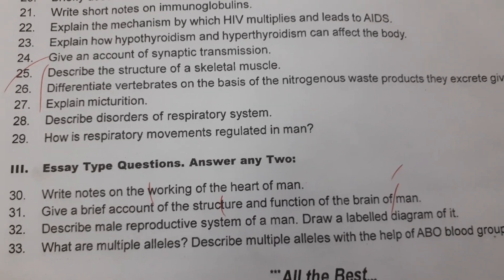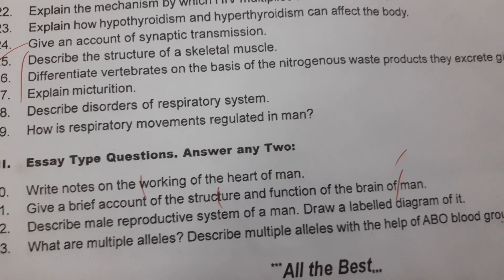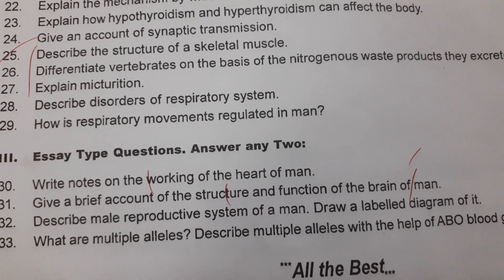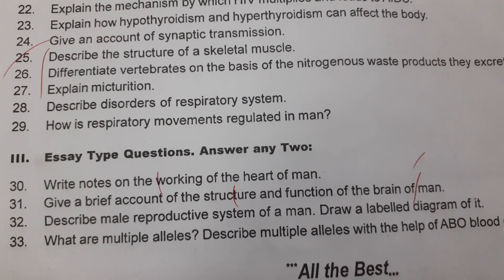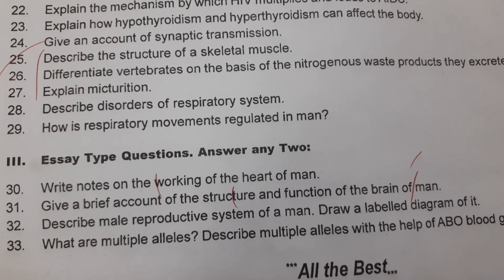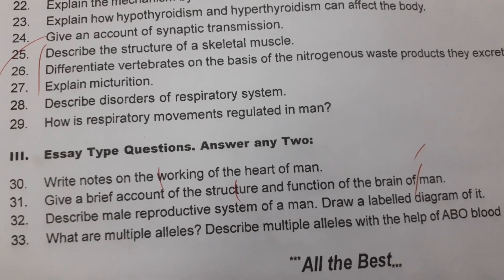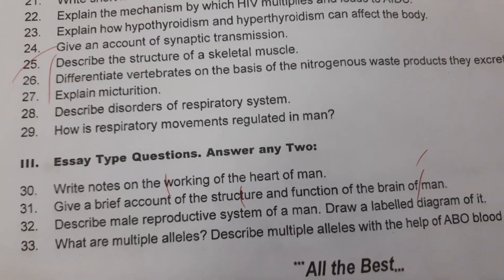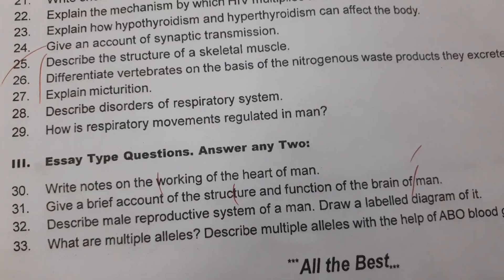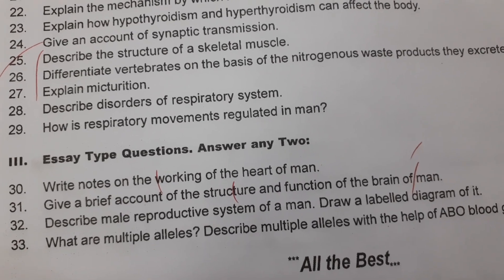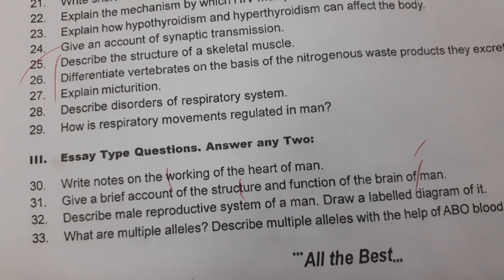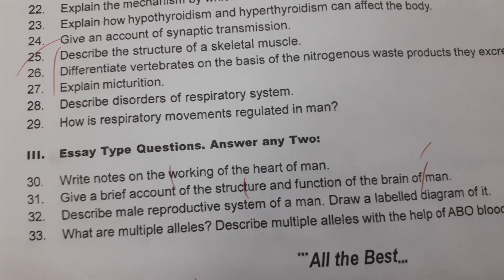This is the second year Zoology paper as per the new pattern. Draw labeled diagrams wherever required — neat diagrams are appreciable. Neatness is very important; your answers should be very legible with side headings underlined. Present the paper in a very attractive manner, and then you can score 60 out of 60 in the Zoology paper.